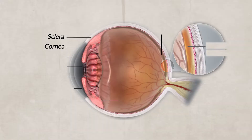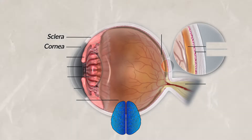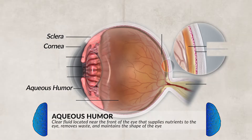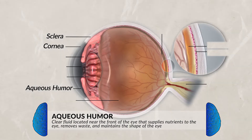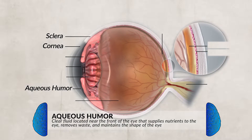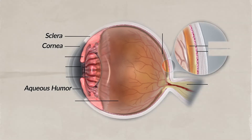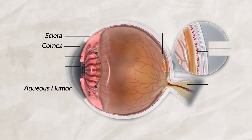Right behind the cornea is a part of the eye that is filled with fluid. This part of the eye is the aqueous humor. It is made up of water and salt and helps maintain pressure within the eye, and also provides nourishment to the cornea and lens.